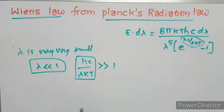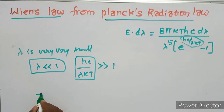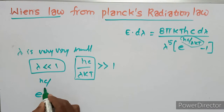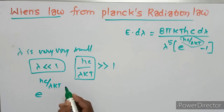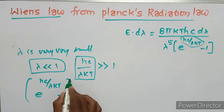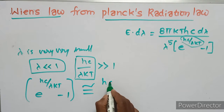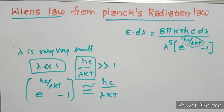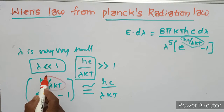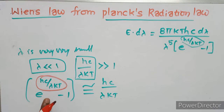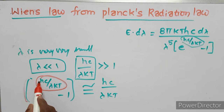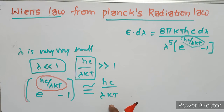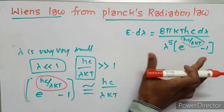Since hc/(lambda·kT) is much greater than 1, the value of e to the power of hc/(lambda·kT) is very high compared to 1. Therefore, (e to the power of hc/(lambda·kT) minus 1) is approximately equal to e to the power of hc/(lambda·kT).